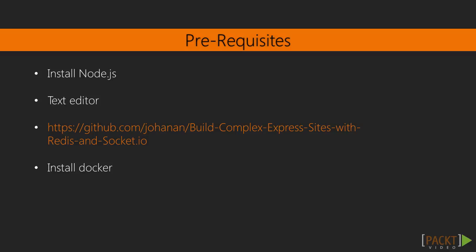In addition to Node.js, you will just need any text editor. I will be using GitHub's Atom editor, but you can use whatever text editor you are comfortable with. And finally, you will need Docker installed to work with Redis. If you do not have Docker installed, I will show you where you can download an easy-to-use installer in the first video. At this point, you are probably tired of hearing me talking, and you are ready to start building something. So let's go ahead and start the course.